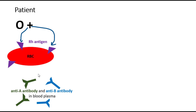The immune system builds antibodies against the antigens that we do not have. So this patient does not have A antigen and B antigen. Therefore, the immune system of the patient builds antibodies against A antigen and antibodies against B antigen, and releases these antibodies into the blood plasma.